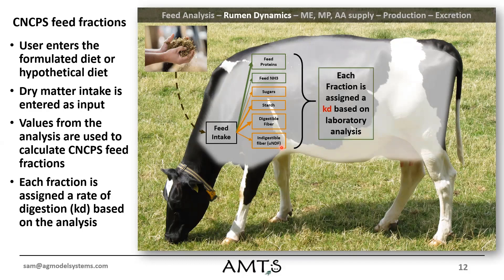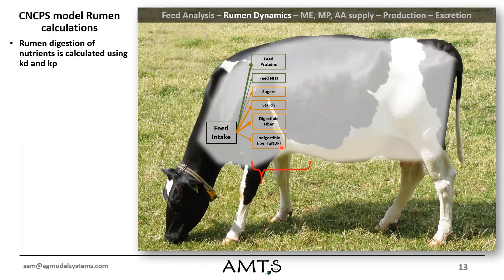Each fraction is assigned a KD. And when available, we give it a KD based on laboratory analysis. If we don't have good laboratory analysis to base that from, then we're going to be using the book values. So we run the KD over KD plus KP calculation, and this gives us that digestion of each of these different pools.